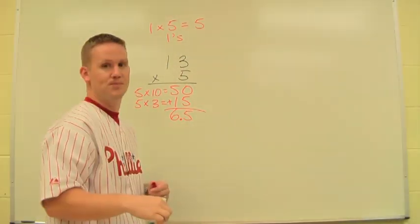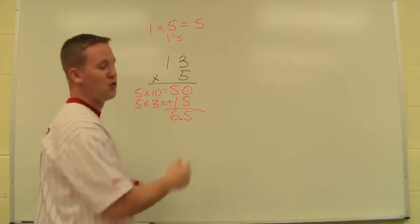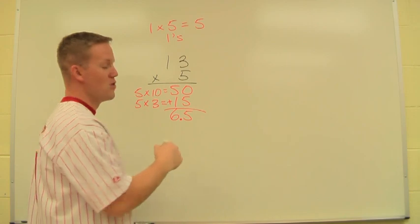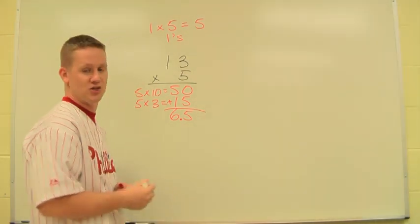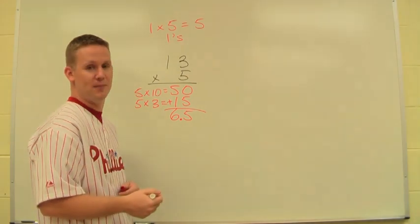It takes away the having to figure out how many decimal places there are. Especially when there's multiple decimals or more than one decimal place, this makes it a lot easier. So that's the partial products method for multiplication using both whole numbers and decimals.